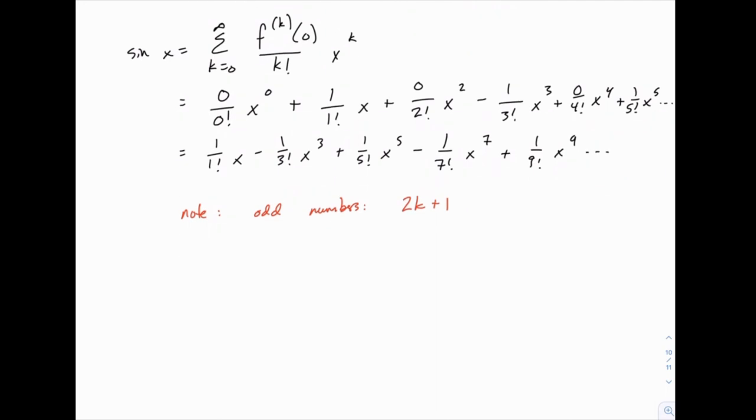And our formula will start with k equals 0. And each term is going to have that expression for the odd numbers in the denominator as a factorial, the 1 in the numerator, and then x raised to that same power. That's the pattern for all of them.